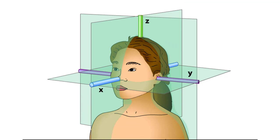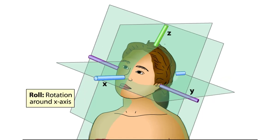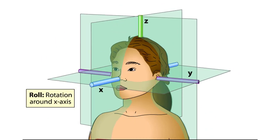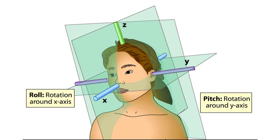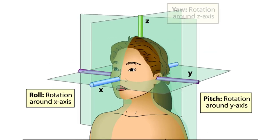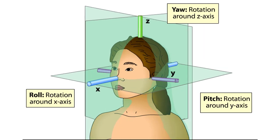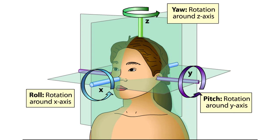Rotations about the X, Y, and Z axes are commonly referred to as roll, pitch, and yaw. The positive direction of head rotation follows a right-hand rule. That is, if the fingers of the right hand are curled in the direction of the arrows, the thumb points in the positive direction of the axis.